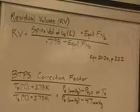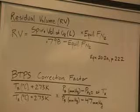So what we have here is body temperature in degrees Celsius plus 273 Kelvins, divided by the temperature of the air that we're measuring in degrees Celsius plus 273 Kelvins, all multiplied by barometric pressure minus water vapor pressure at the temperature of the air that we're measuring, divided by barometric pressure minus 47 millimeters of mercury.